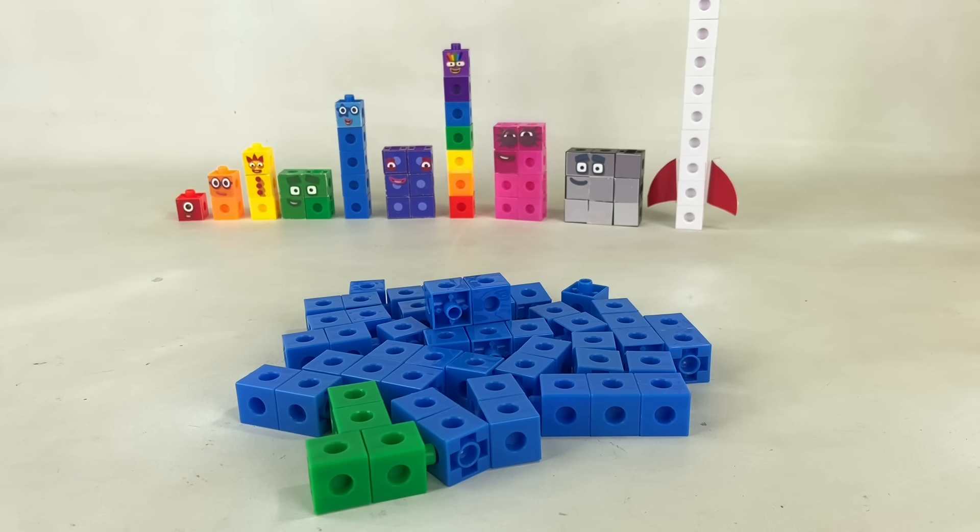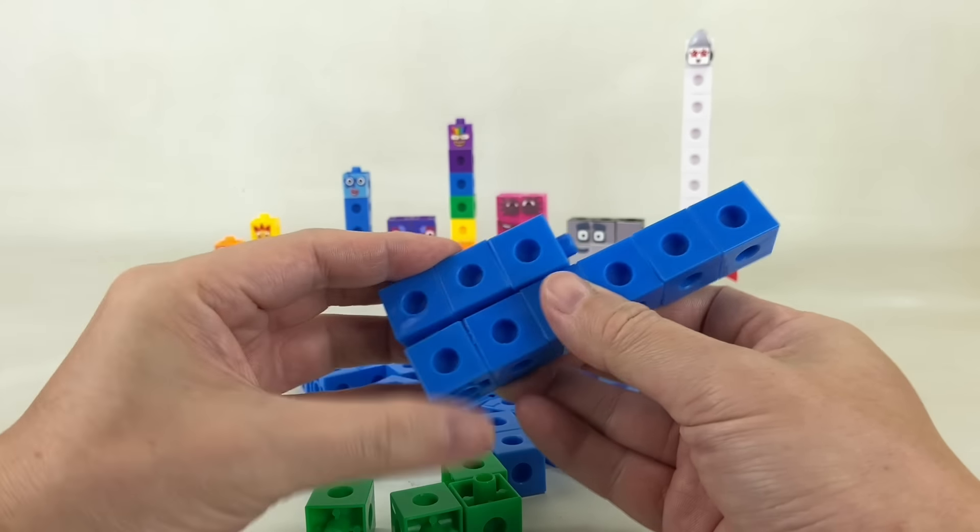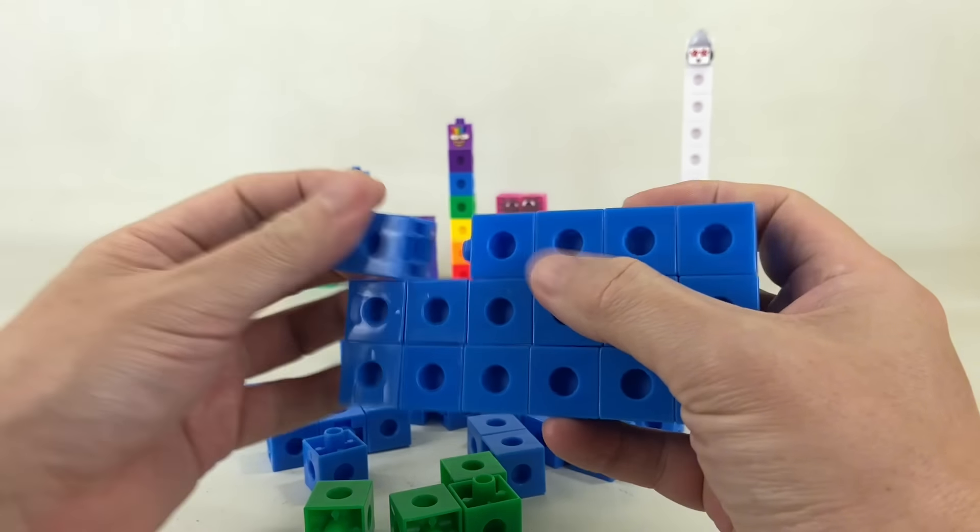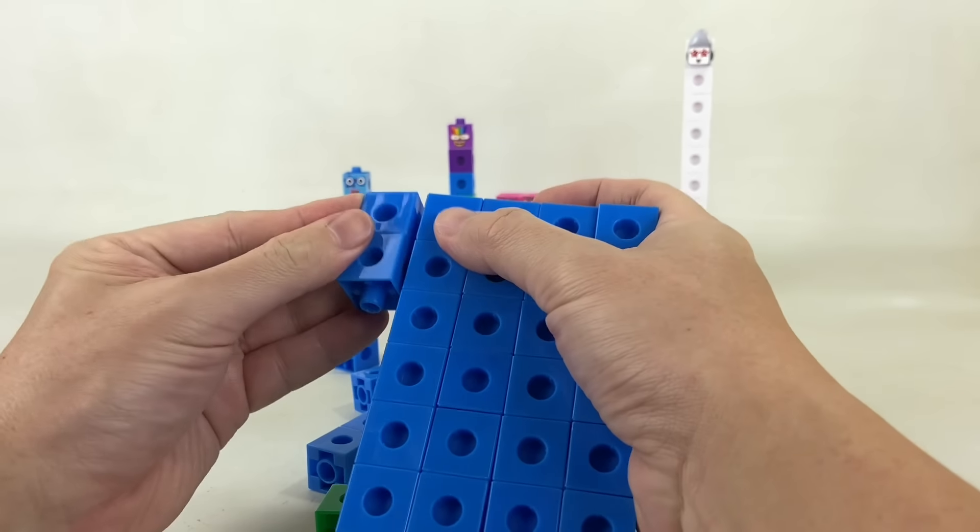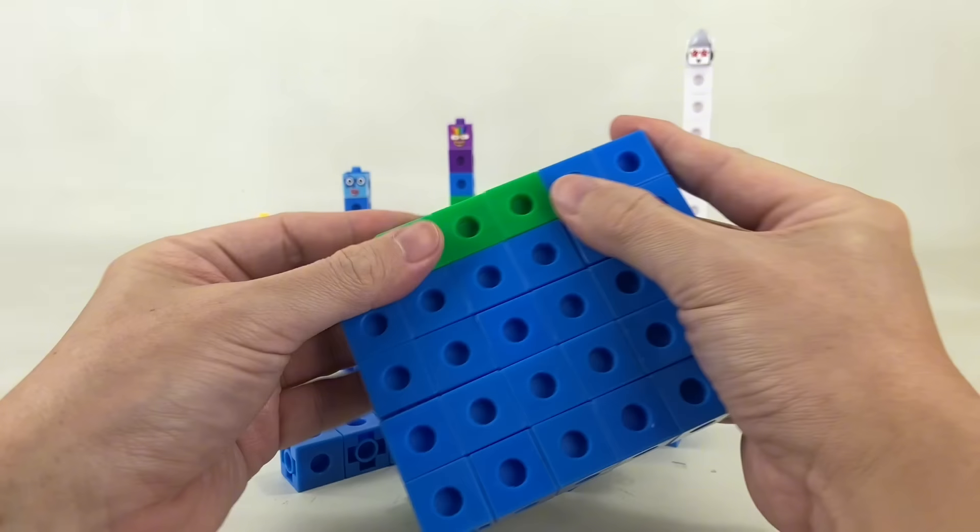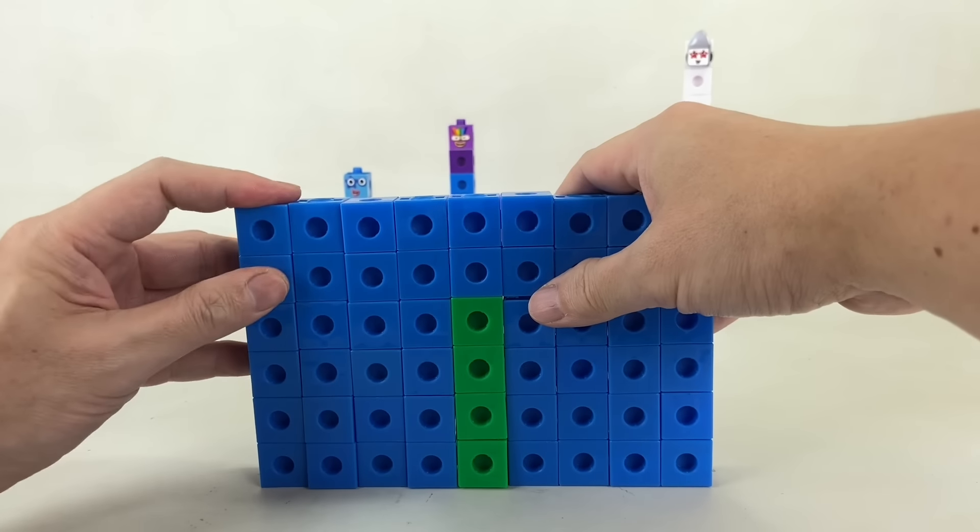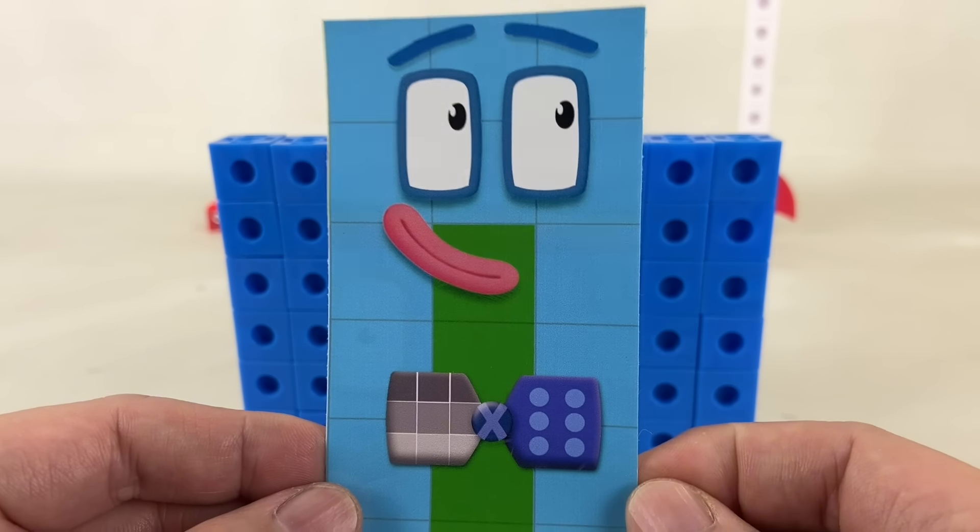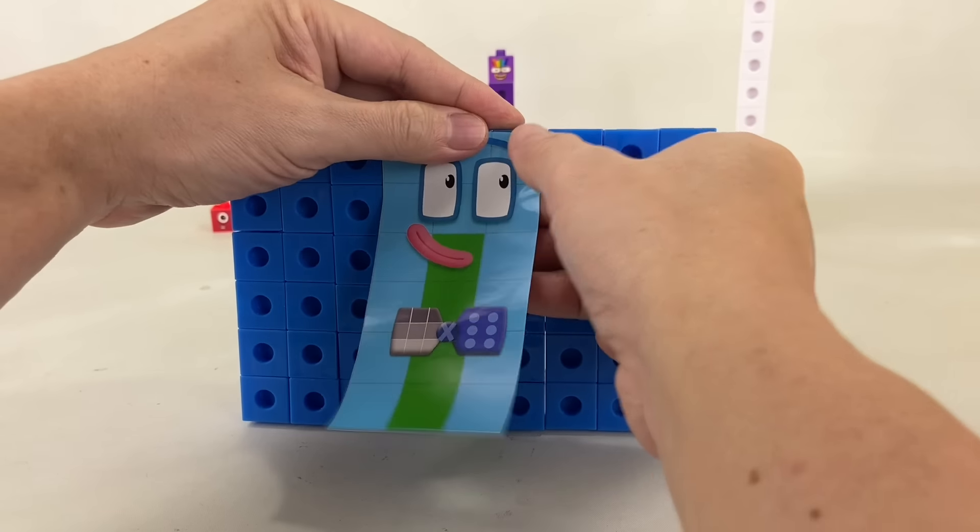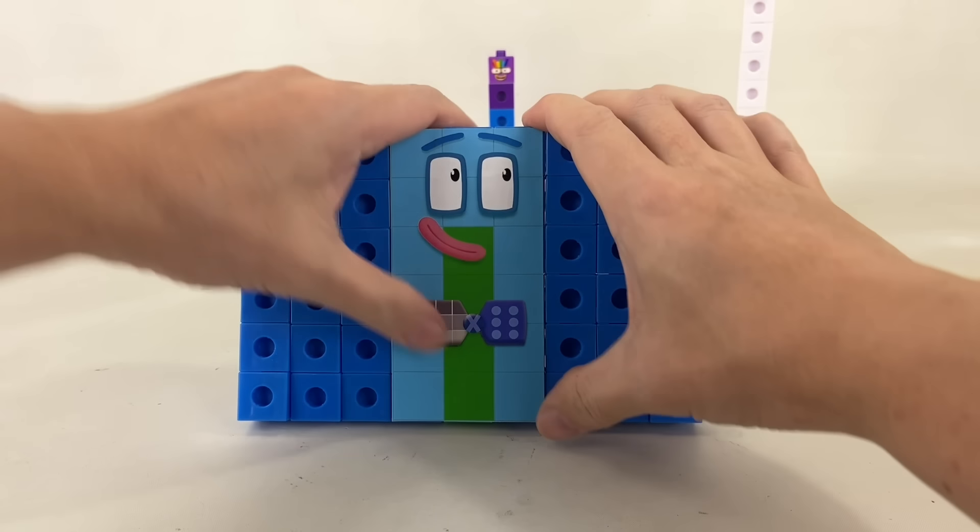Now it's time for 54! 54 has 50 light blue blocks with blue borders and 4 green blocks. He has blue rectangle eyes, eyebrows, limbs, and pink lips.